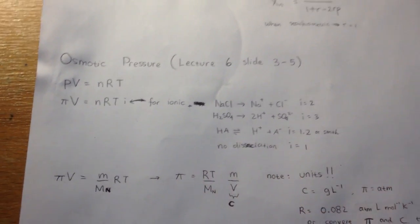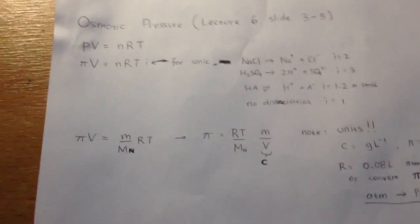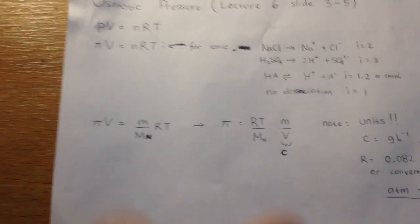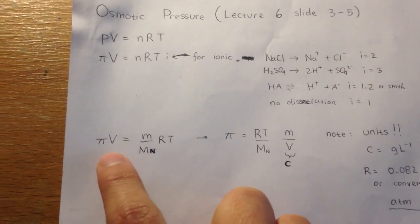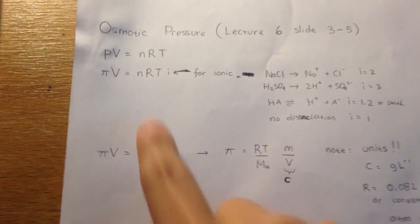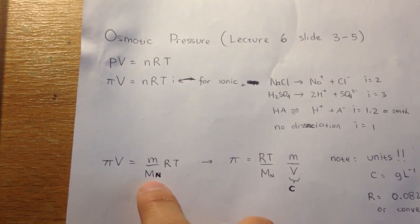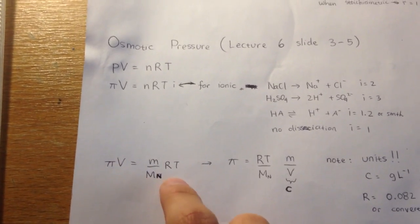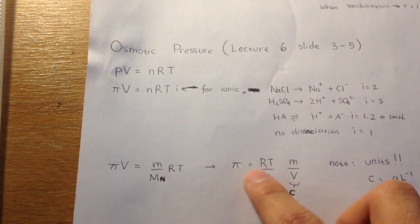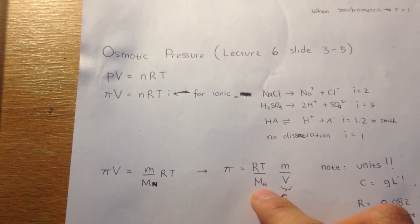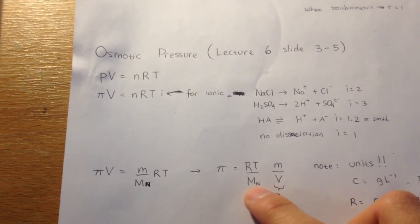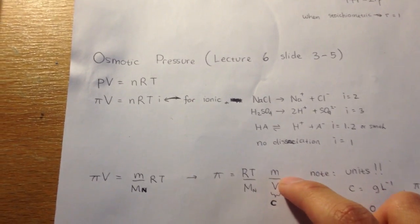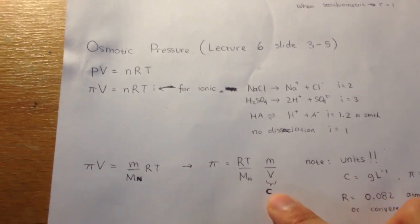And mostly in polymer, there won't be any dissociation, so just consider i to be 1. Moles are mass over molar mass, and just put V here, so it will be pi equals RT over Mn, that is the average molar mass. And this is M over V, and this is concentration.